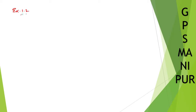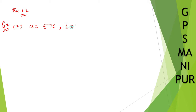Now we are dealing with exercise 1.2, question number 2, roman number 3, which is A is equal to 576 and B is equal to 2520.